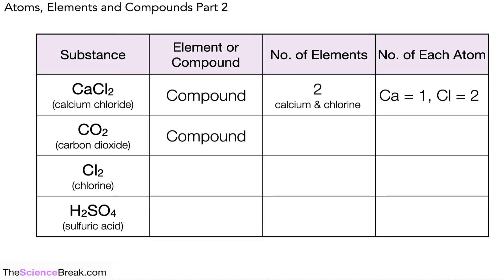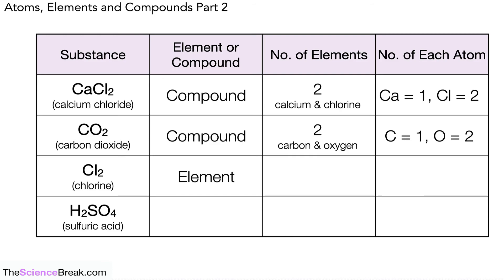For carbon dioxide, CO₂, this is a compound with two elements — carbon and oxygen. It has one atom of carbon and two atoms of oxygen. We don't need to write a subscript one next to the C, as no subscript automatically means one atom. Chlorine by itself is an element — it's made of one type of atom, so it has one element which is chlorine, and there are two atoms of chlorine in the substance Cl₂.